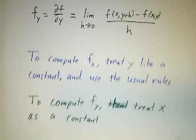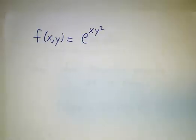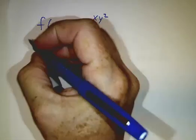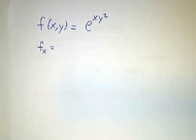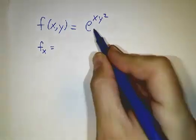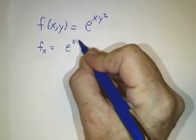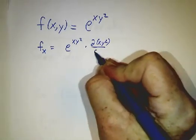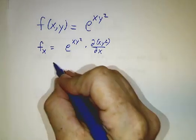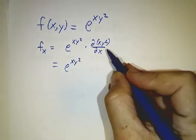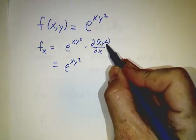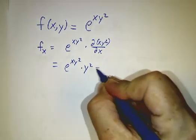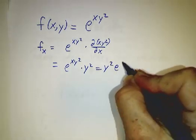So, let's work an example. Let's take a look at the function f is e to the xy squared. If you want to figure out what f_x is, you just use the chain rule. What's the derivative of e to the something? It's e to the something times the derivative of that something. And in this case, since y is a constant, the derivative of a constant times x with respect to x is just that constant. So, I would probably write that as y squared e to the xy squared.